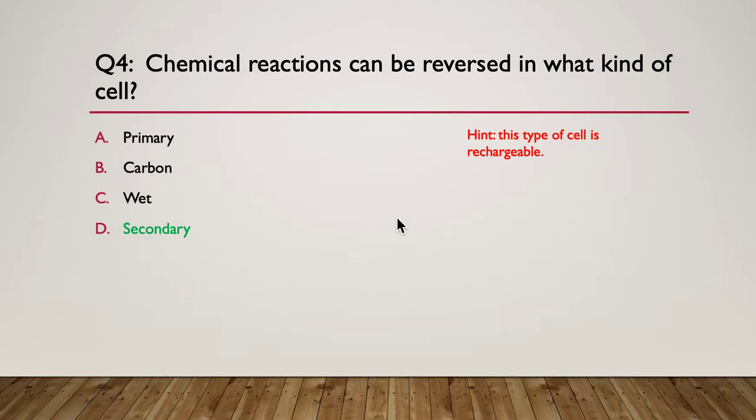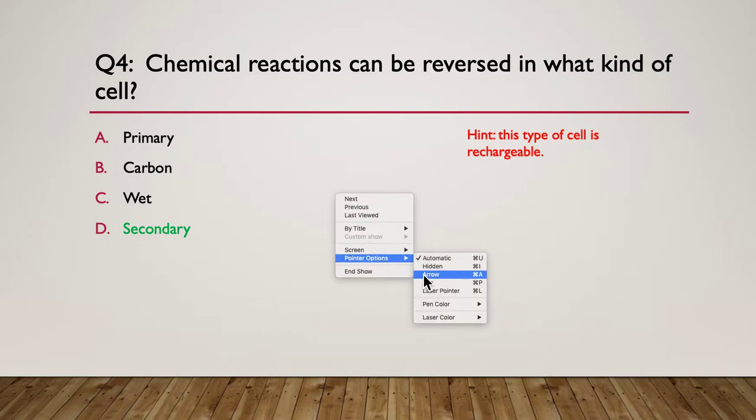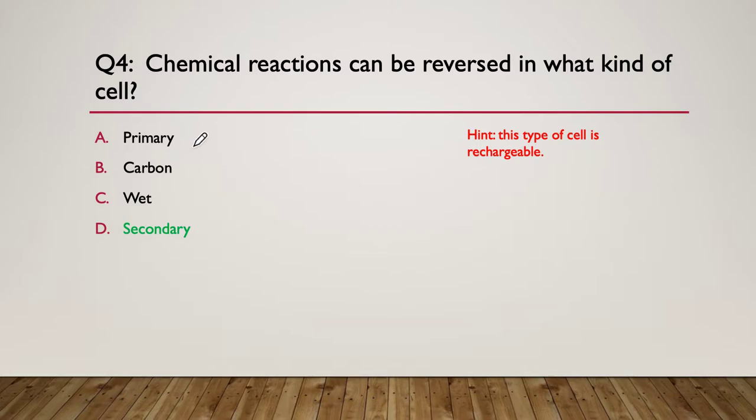A secondary cell is the only one that the chemical reaction can be reversed in. Primary cell is single use, single charge only. Even though carbon is involved in a cell, it has nothing to do with whether it's reversible or not. And you can have wet cells that are primary and secondary. So, wet didn't really tell you much. So, it had to be secondary.